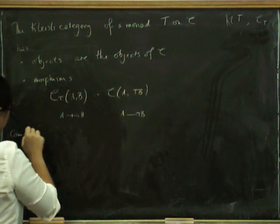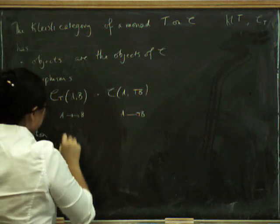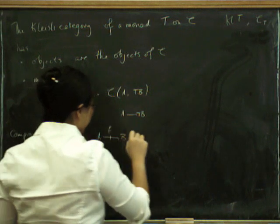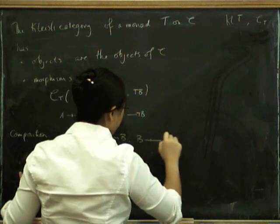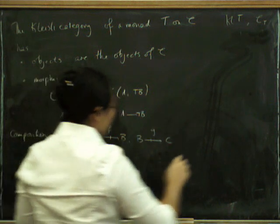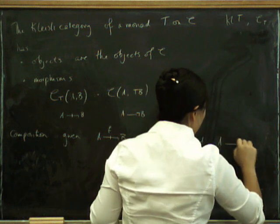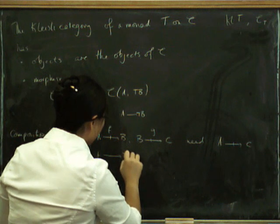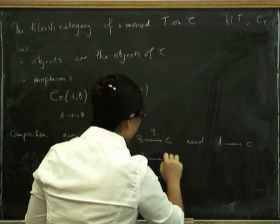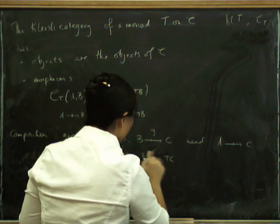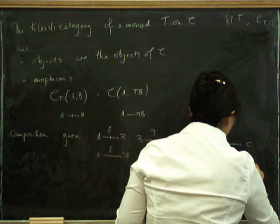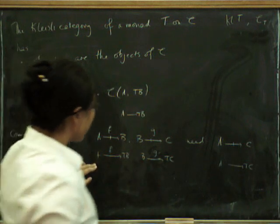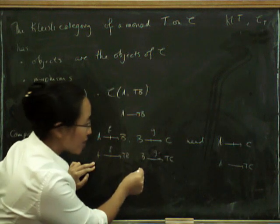So let's think about this for a second. Composition. Given an F and a G, given a composable F and G in the Kleisli category, we have to produce a map from A to C in the Kleisli category. So of course, F is secretly a map from A to TB, G is a map from B to TC, and we're looking for a map from A to TC. Stare at this for a second and see how we could possibly come up with a map from A to TC. We can't just stick them together in the middle because they won't go.